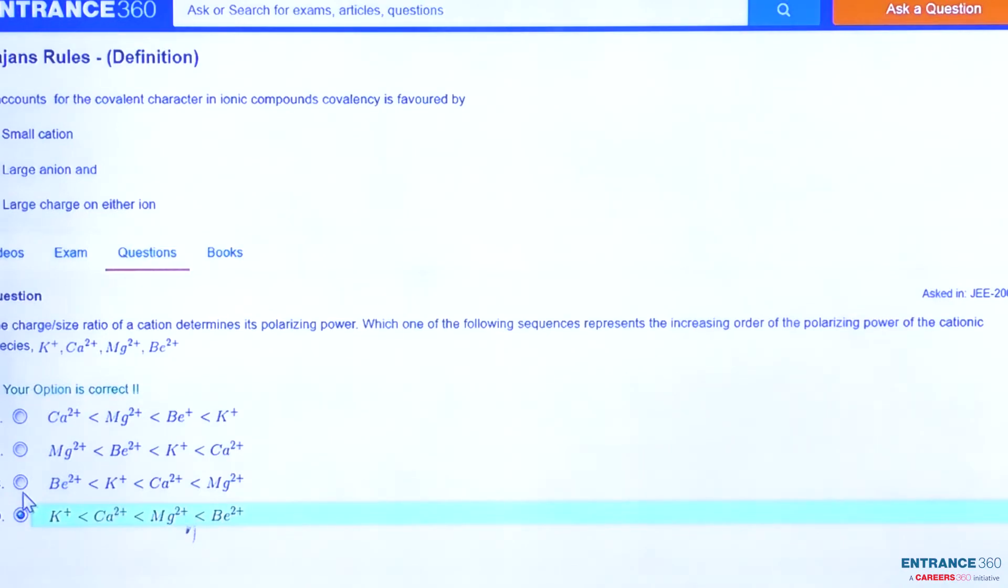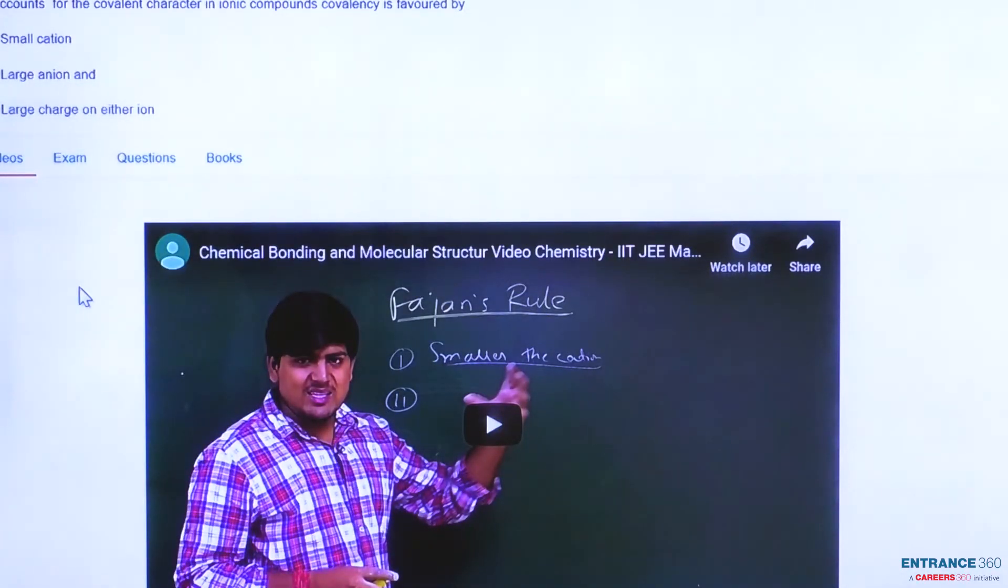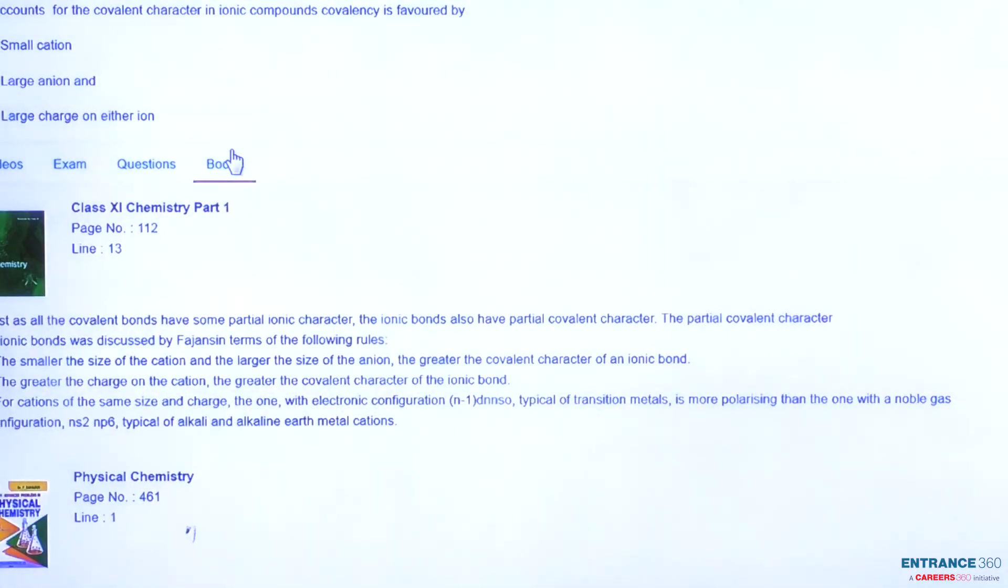We can practice some more questions based on this topic and we can see its reference video from here which is around 2 or 3 minutes. For further clarification about the topic, we can refer to the chemistry book of NCERT of class 11th, and this concept is on page number 112 in line 13. Further we can refer to another book which is Physical Chemistry by P Bahadur, and this concept is on page number 461 in line number first. Thank you, students.